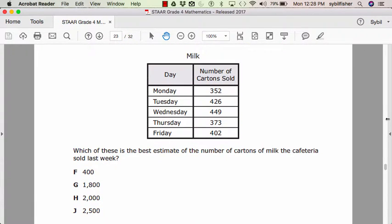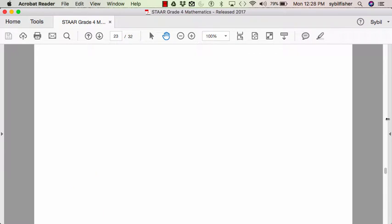F, four-hundred. G, one-thousand-eight-hundred. H, two-thousand. Or J, two-thousand-seven-hundred. That was 2,500.